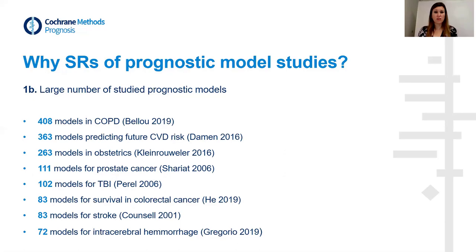At the Julius Center in Utrecht in the Netherlands, we worked on a systematic review looking at all the models developed for predicting future cardiovascular disease risk. There were almost 400 models developed and validated — so that's a huge number of studies.